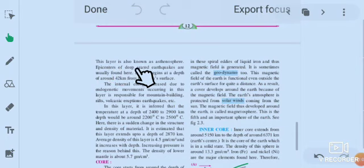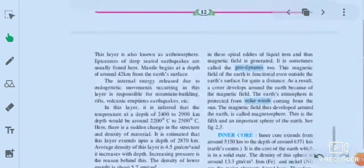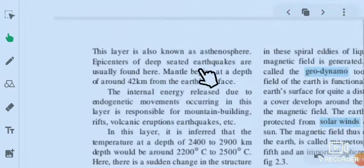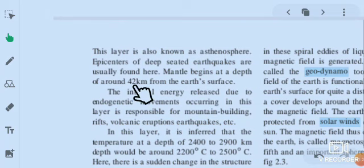This layer is also known as the asthenosphere. Epicenters of deep-seated earthquakes are usually found here. Mantle begins at a depth of around 42 kilometers from the earth's surface. The internal energy released due to endogenic movement occurring in this layer is responsible for mountain building, rifts, volcanic eruptions, and earthquakes.